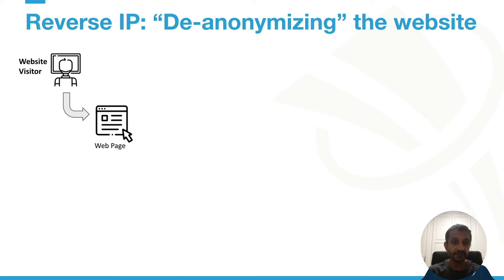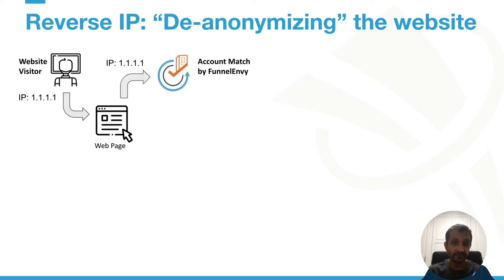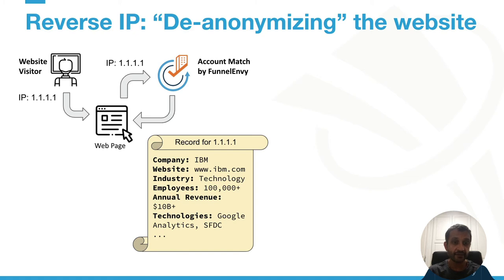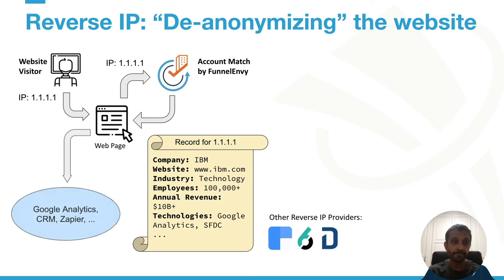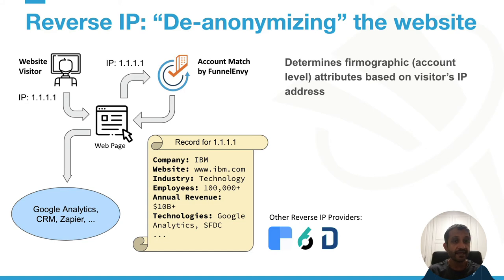Every website visitor coming to your site requests pages from the site, and with that sends their IP address — that's the key. Various services, including Account Match by Funnel Envy, can turn that IP address into an account record. That account record contains various firmographic attributes like the company, website, industry, number of employees, revenue ranges, and potentially even the technologies they're using. Account Match isn't the only solution out there — there are plenty of other services that provide the same capability. The important point is that record can be pushed back to your web page and also to various analytics tools, your CRM, Zapier, or anywhere else it needs to go.